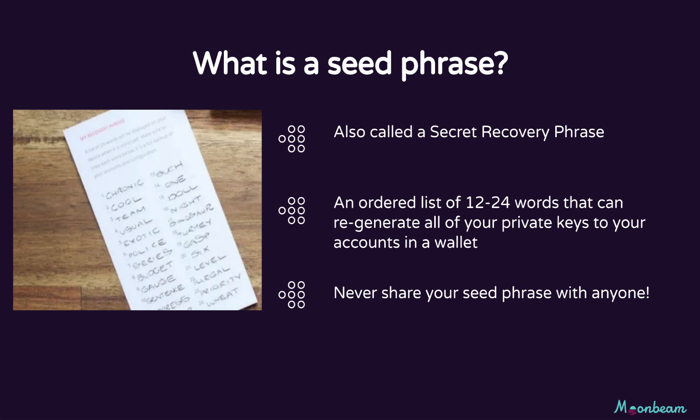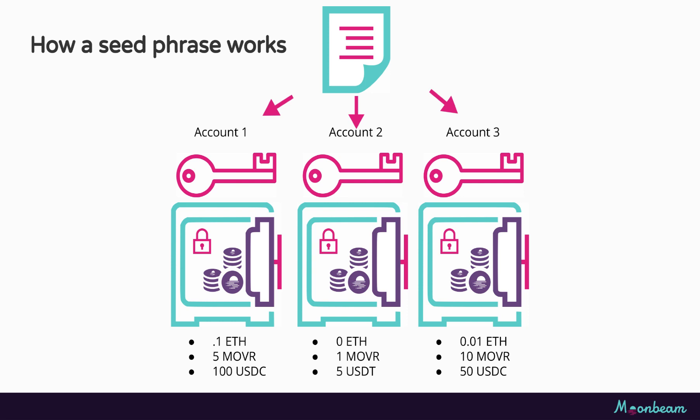A seed phrase, in other words, gives you full access to the funds in every single account in that wallet. The order in which those words are arranged is very important. If you reverse or forget any of the words, your seed phrase will be invalid and you'll lose all your funds. Seed phrases are easier to write down than private keys, and they help to minimize the error-prone process of writing down a private key. You can think of a seed phrase to a wallet as being similar to the master password on a password manager.